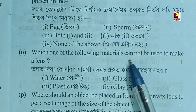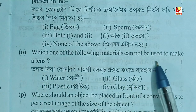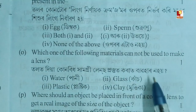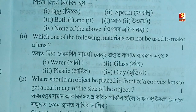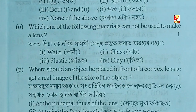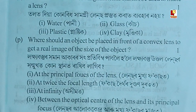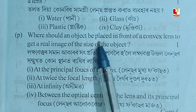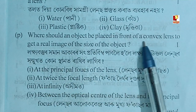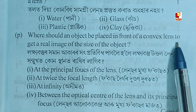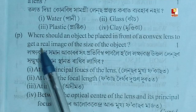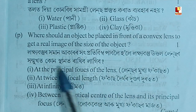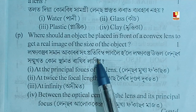Which one of the following materials cannot be used to make a lens? Where should an object be placed in front of a convex lens to get a real image of the same size as the object?